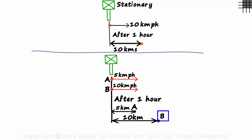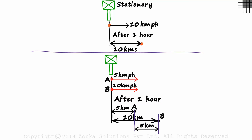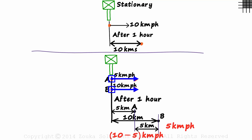We had asked the speed of B relative to A, so we find the distance between A and B after the first hour. If this distance is 10 and this one is 5, the distance in between will be 5 km. The distance between them has increased by 5 km after one hour, and every additional hour it increases by 5 more km. So the speed of B relative to A is 5 km per hour. This is the difference of the speeds of B and A — 10 minus 5 km per hour.